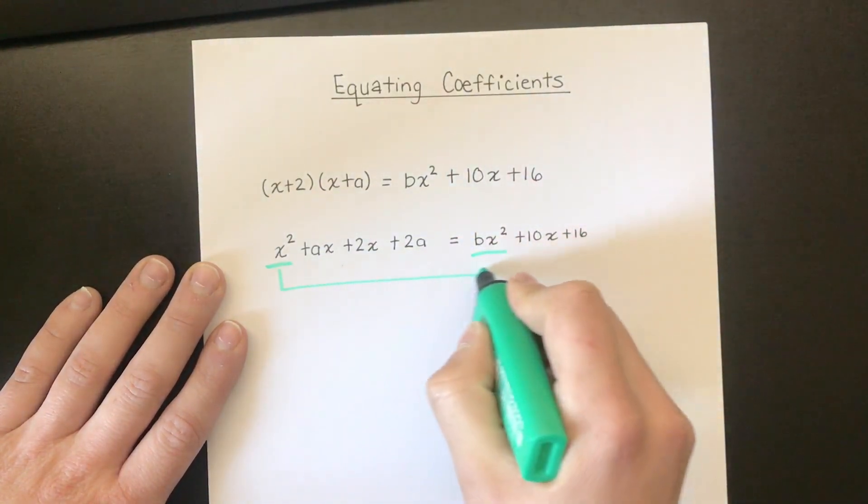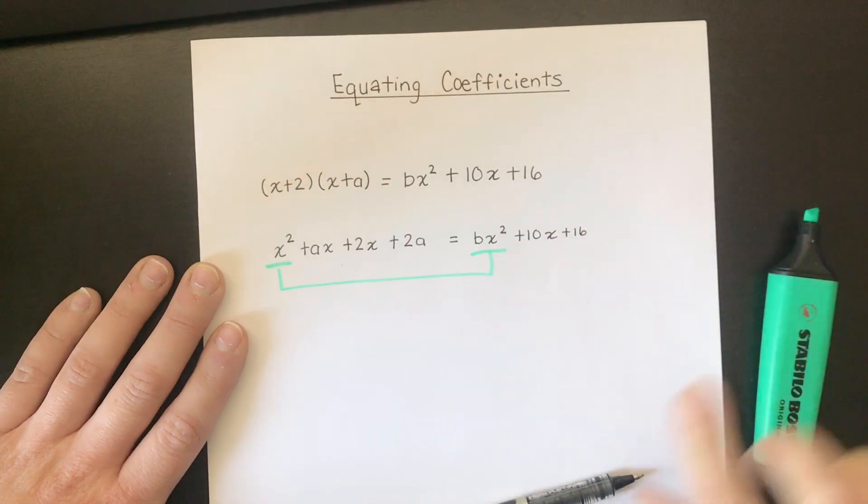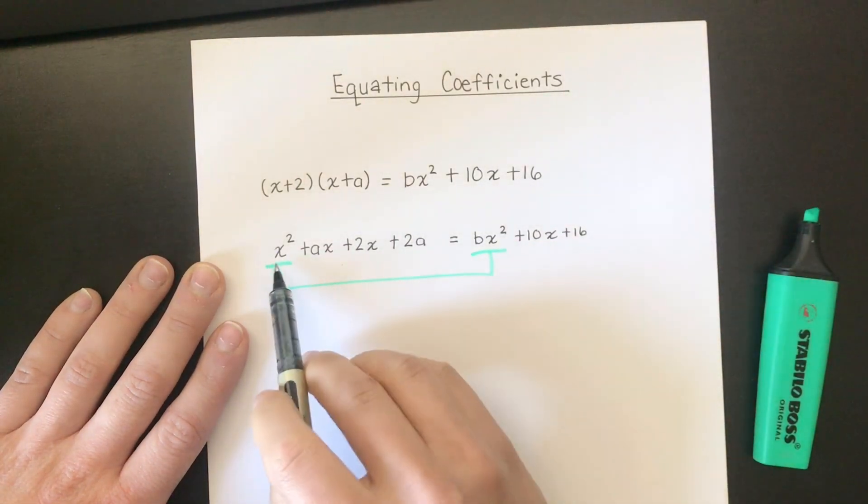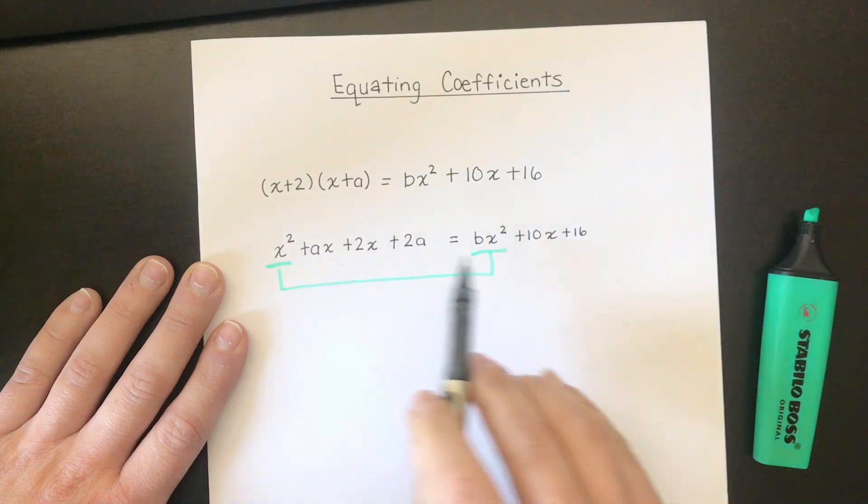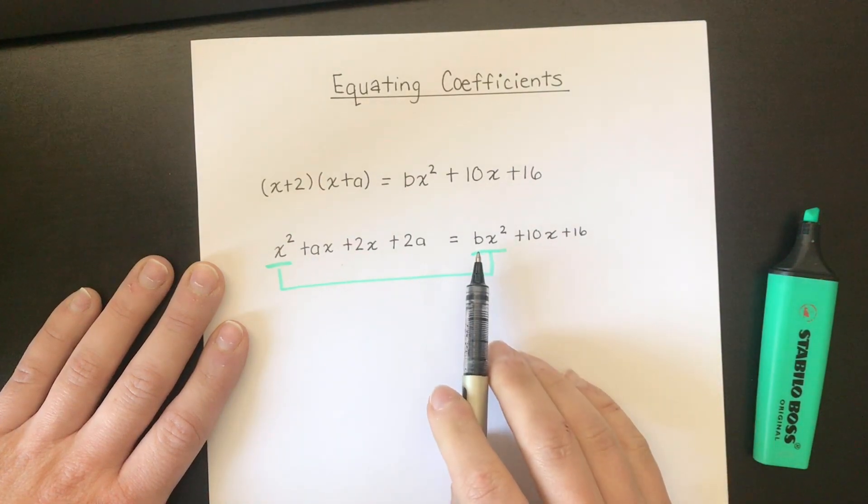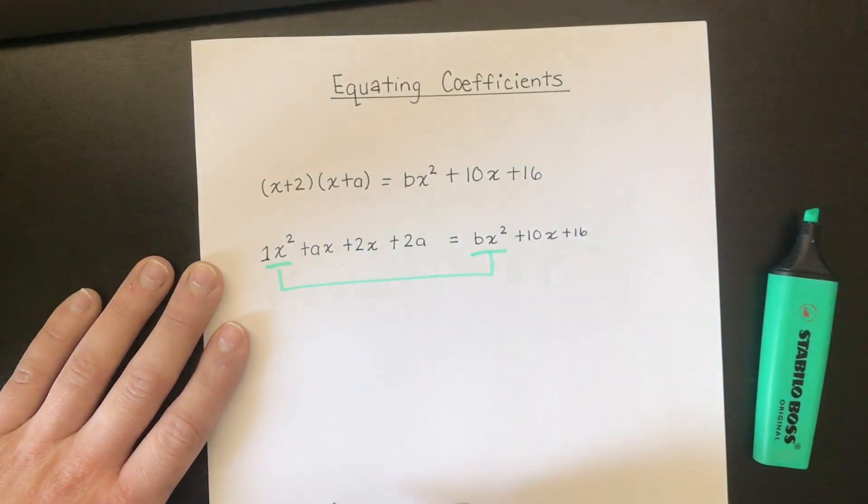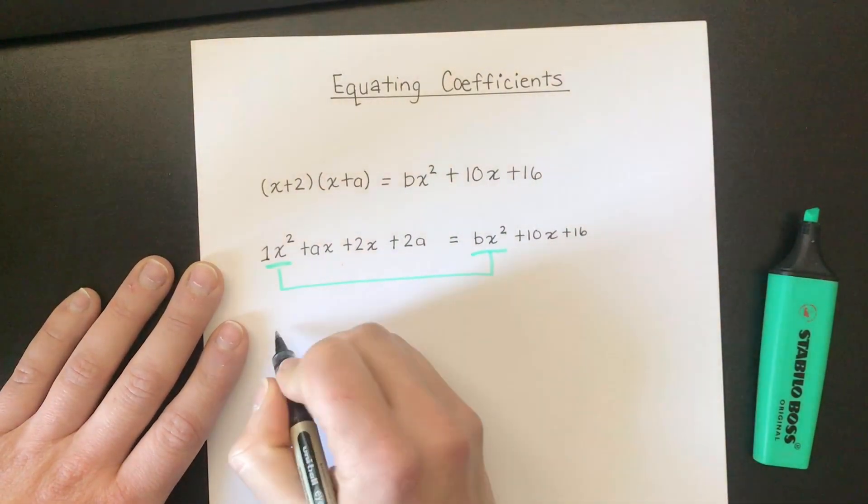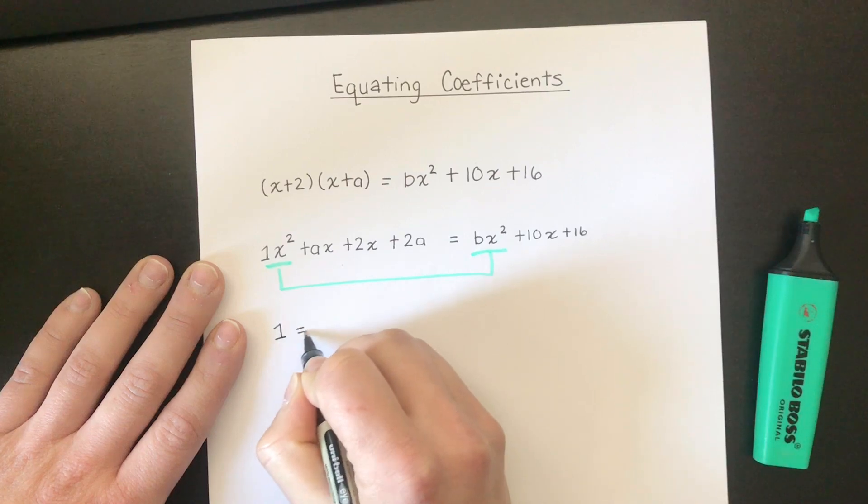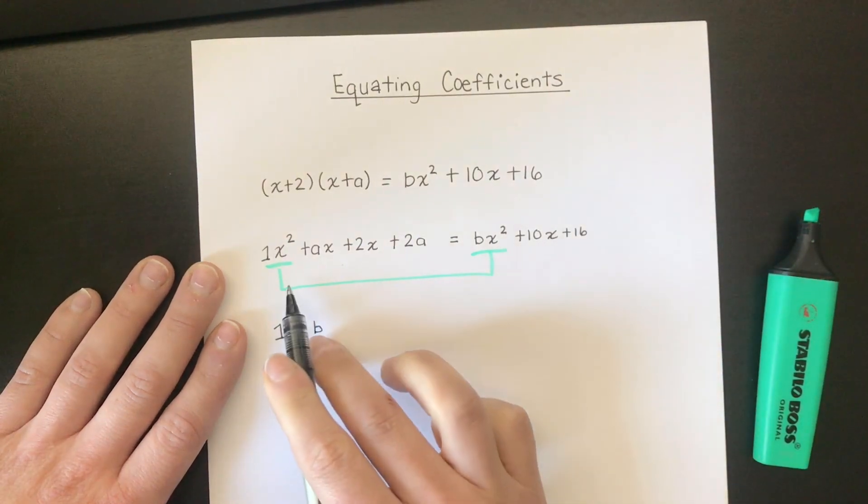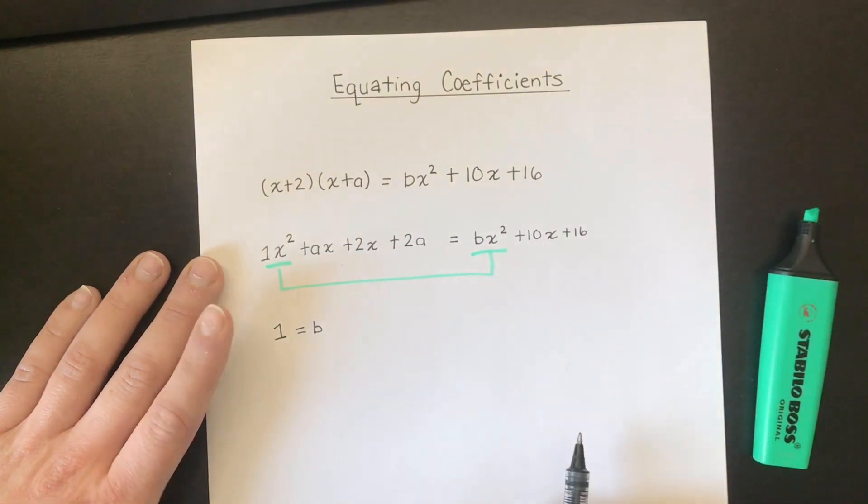So these two things have to be equal to each other. So that means that whatever is in front of this x² has to be the same that's in front of this x². Well in front of this x² is a very invisible one. So from that I can tell that 1 must be equal to b because these two things here have to be exactly the same.